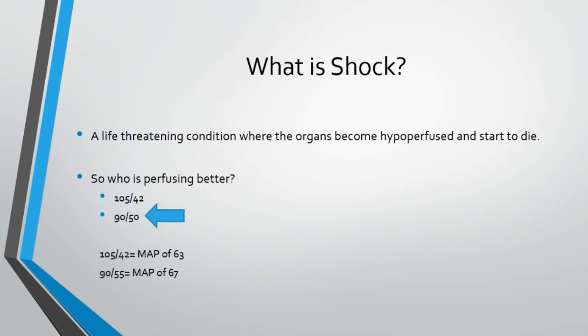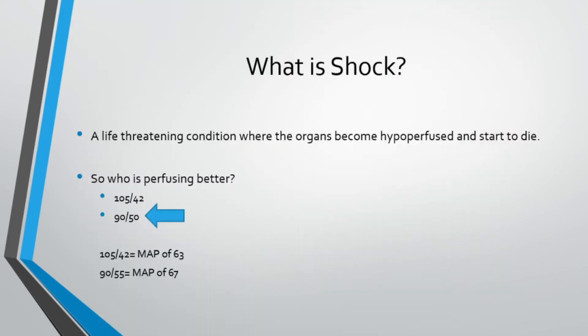We need to stop thinking that a high systolic means the patient is fine. Diastolic is more important than systolic because we spend about two-thirds of our lives in diastole, and two-thirds of the cardiac cycle is in diastole. Vasopressor guidelines in clinical care settings aim for a MAP of 65 — at 65 mmHg the body is able to adequately perfuse all of your organs.